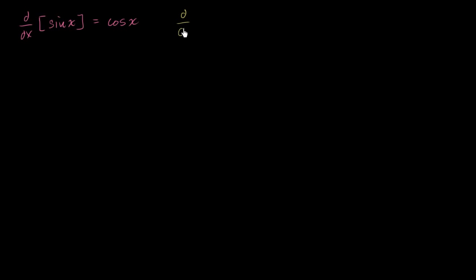Now, what about the derivative of cosine of x? What about the derivative with respect to x of cosine of x? Well, this is going to be negative sine of x. So derivative of sine is cosine, derivative of cosine is negative sine.